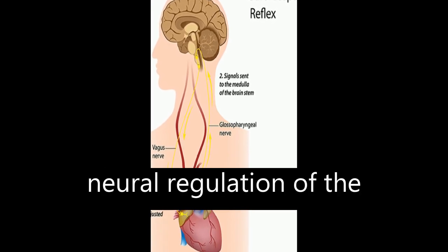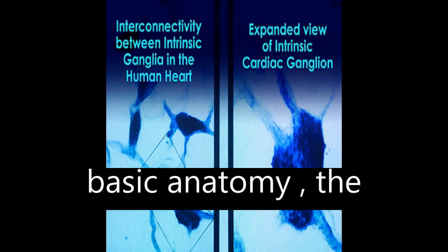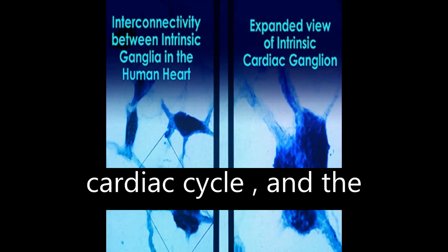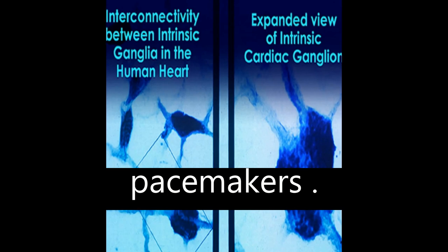This article reviews neural regulation of the heart, including its basic anatomy, the cardiac cycle, and the sinoatrial and atrioventricular pacemakers.